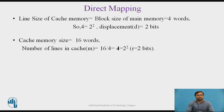Here we are considering the displacement D, which is the last two least significant bits. The cache memory size is assumed to be 16 words. If there are 16 words and each cache line size is four words, then 16 divided by four equals four cache lines. Those four cache lines can be addressed using two-bit binary numbers, so R equals two bits. We will see in the next slide what R and D are in detail.